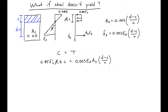We'll have a quadratic where our variable is C. We multiply through by C: 0.85 f'c · β₁ · B · C² on the left side equals Es · 0.003 · (D minus C) · As. We bring all the terms to the left side.